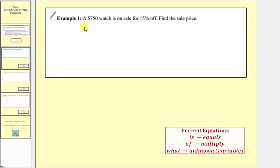Example one, a $750 watch is on sale for 15% off. We want to find the sale price. So the sale price is the unknown, so let's define our variable as s equals the sale price.